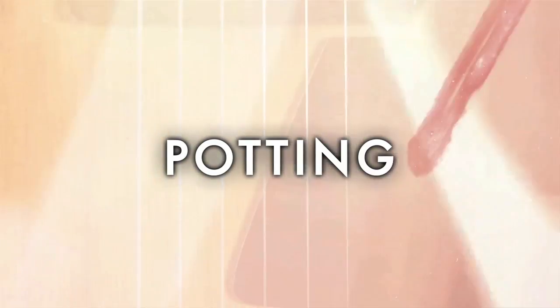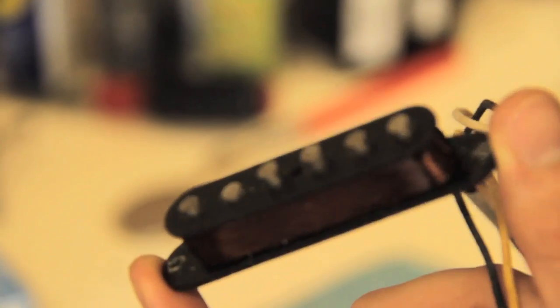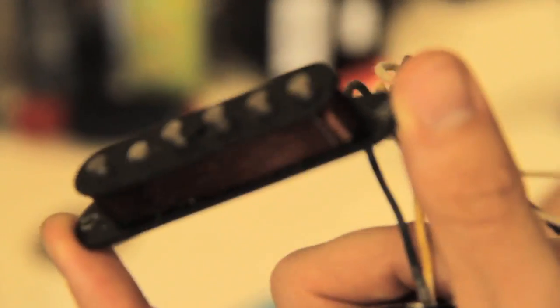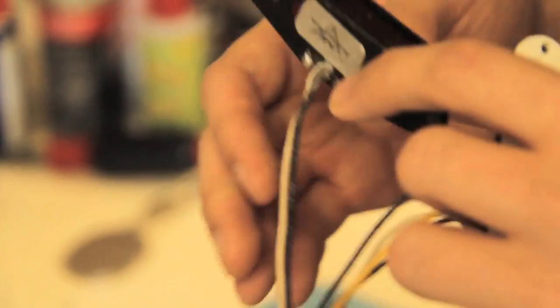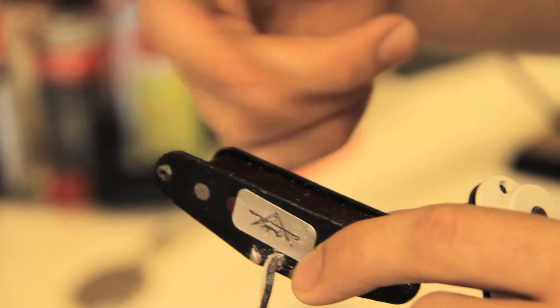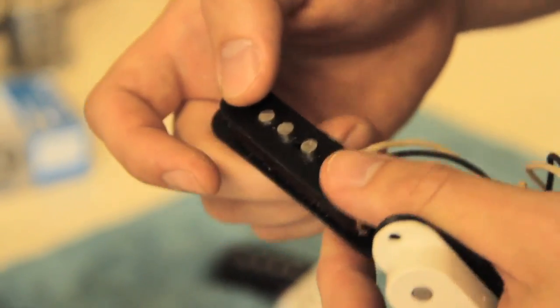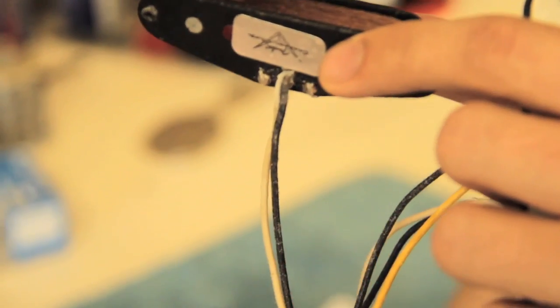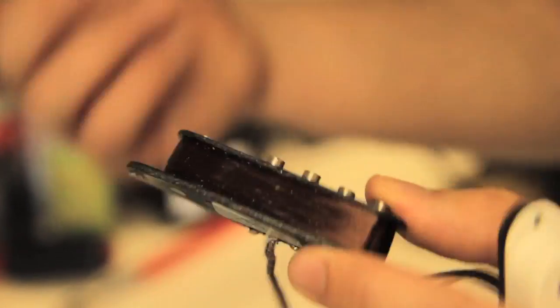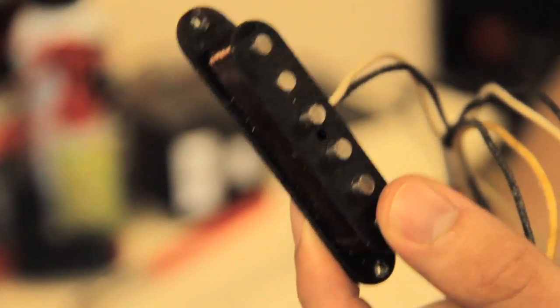The next part of the process after the pickup's been wound to the correct output would be potting it. Potting is a term used when dipping the pickup in wax. It helps preserve the pickup both from any parts moving around, should your magnets get pushed and try to break the wire, but it also helps keep microphonic and feedback noise down. They didn't discover that for a few years, so a lot of early pickups aren't potted.